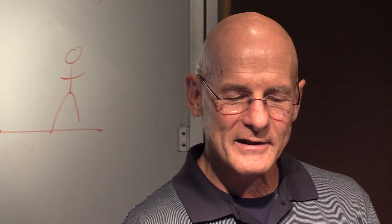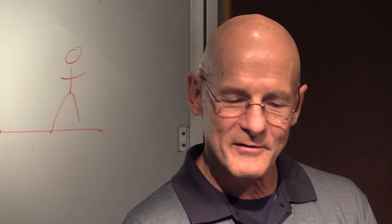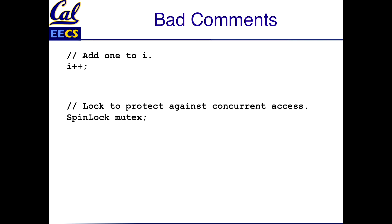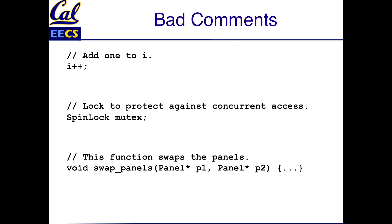Both agree on examples of bad comments. Here's a useless comment: 'Add one to i.' Thanks — glad you didn't leave that uncommented. Another bad one: 'Lock against spin lock mutex' — just restating what the code does. Or: 'This function swaps panels' on a function called swap_panels(panel1, panel2). These comments just describe what the code is, which you can already read.